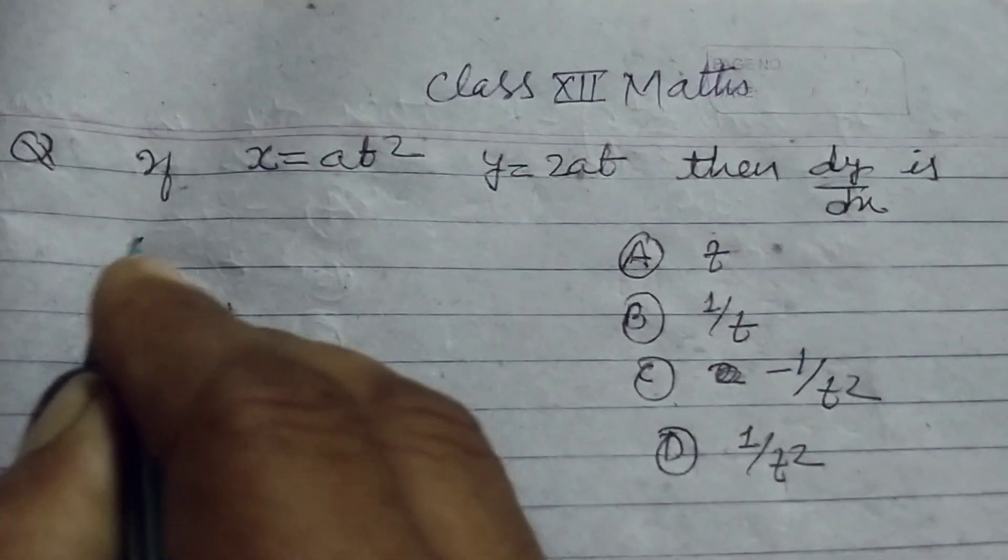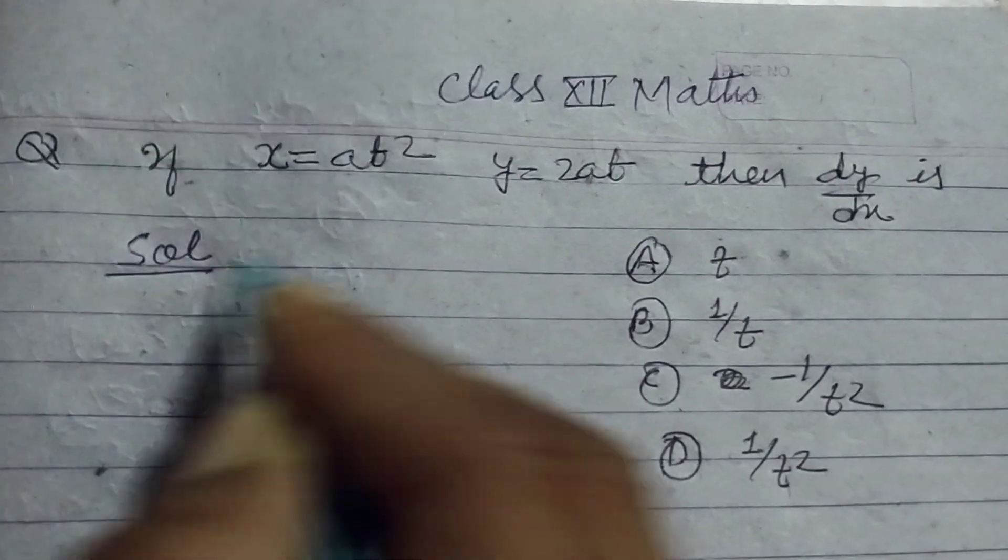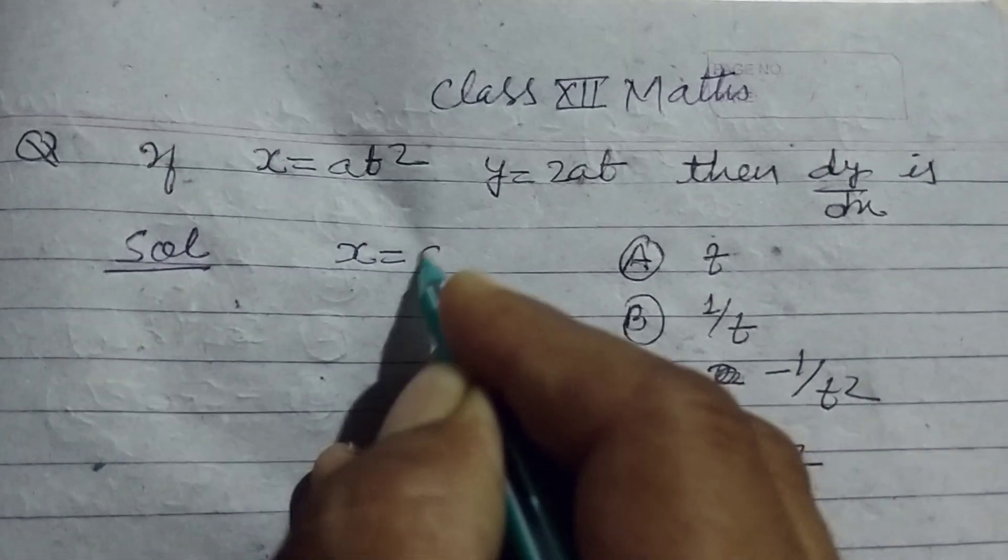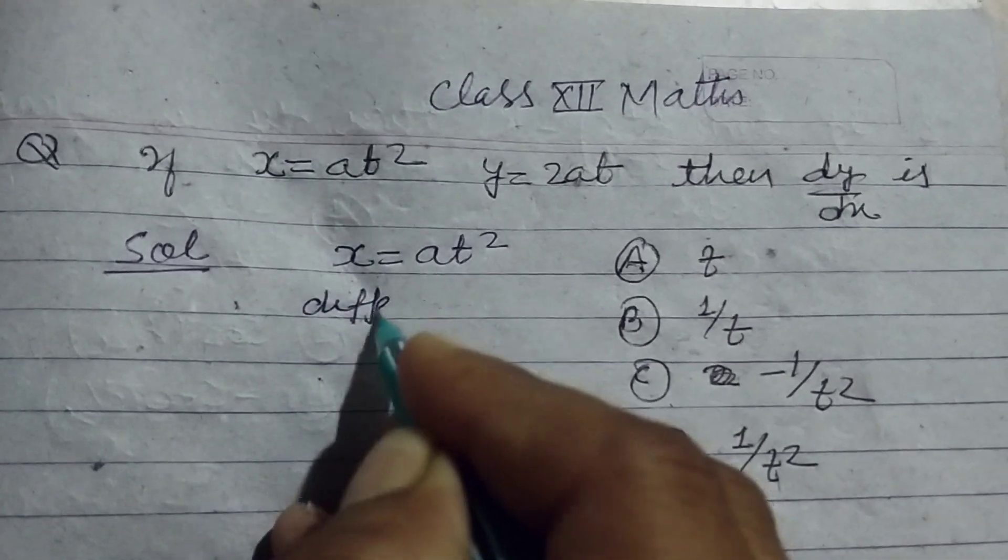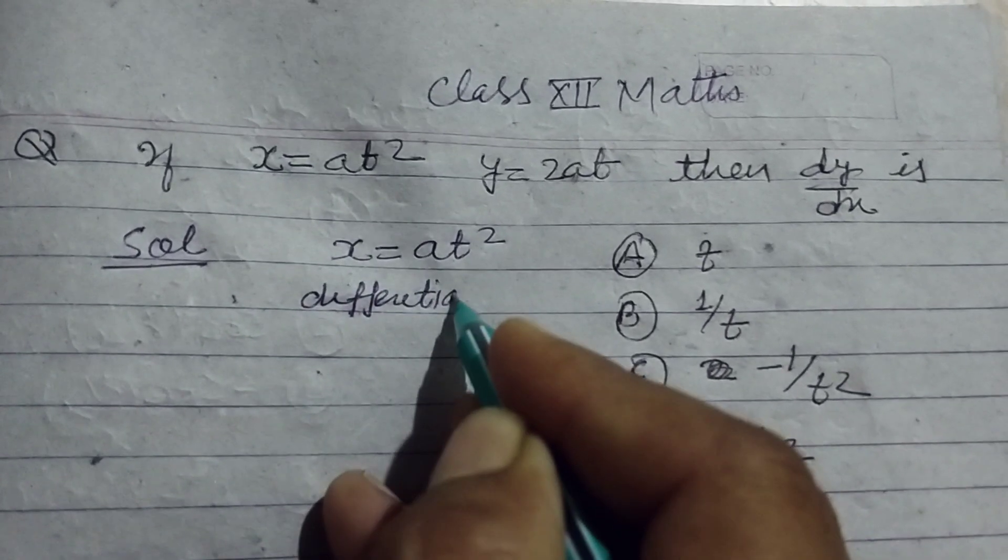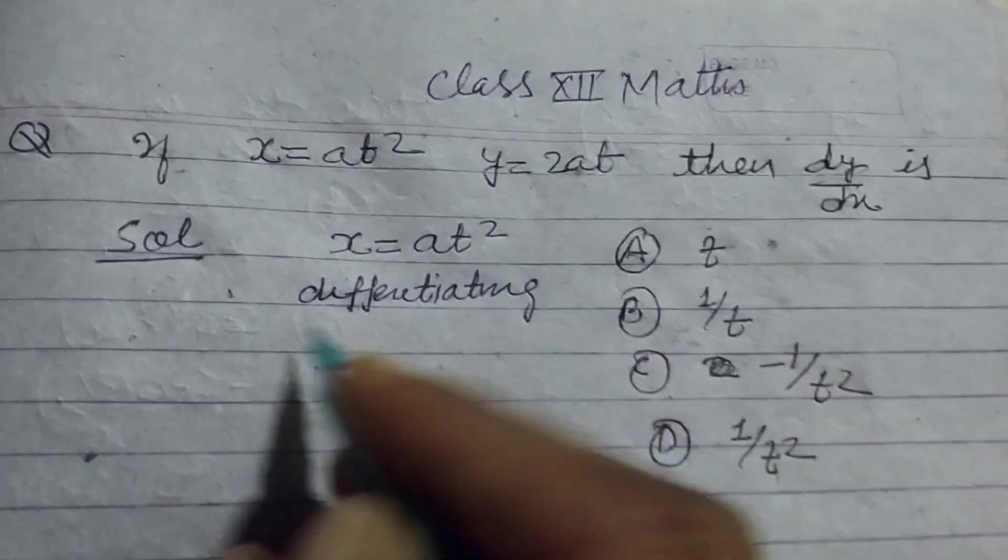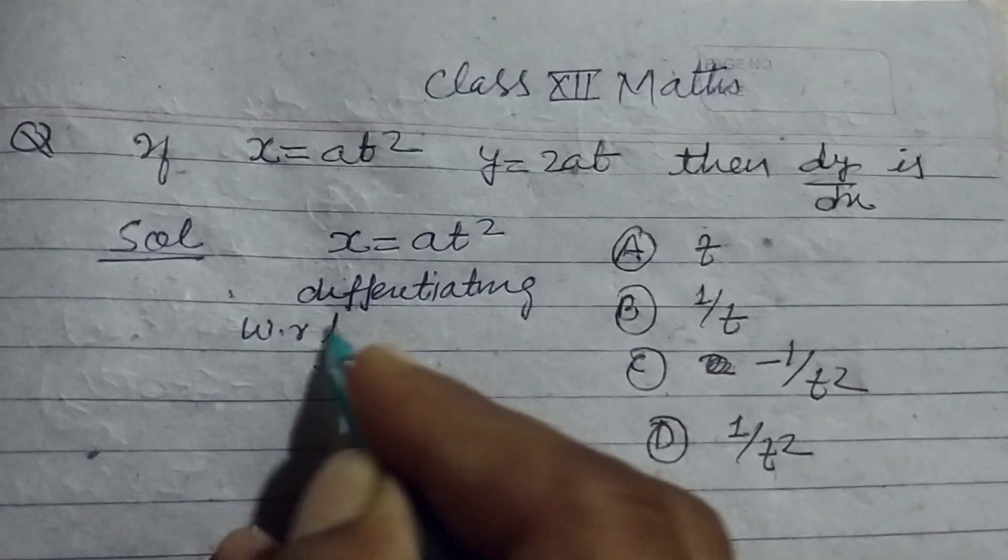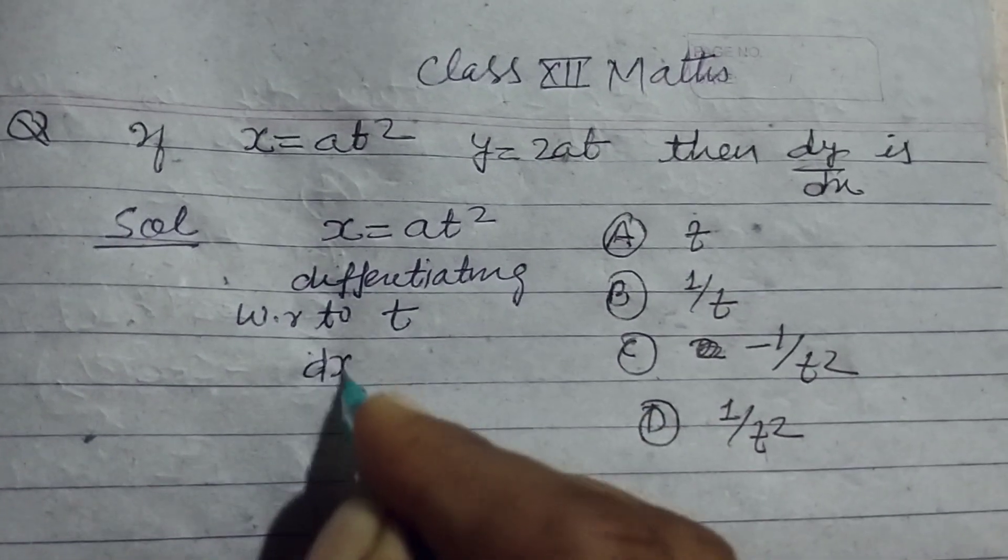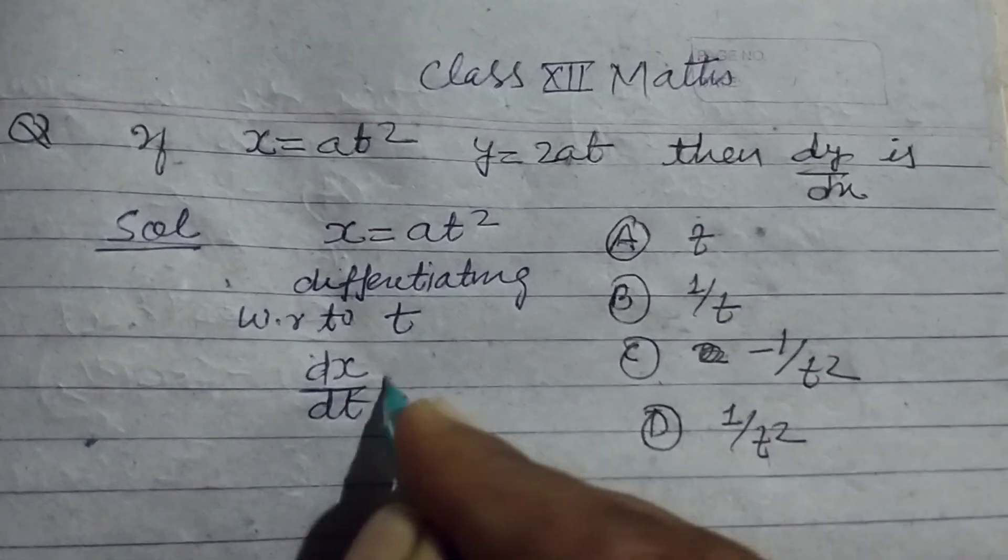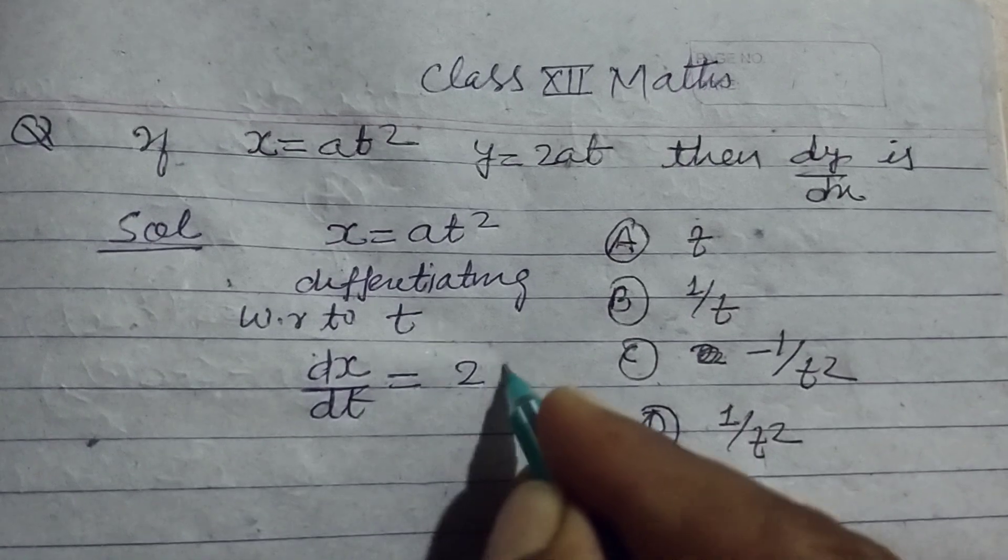So student, here we have x equals at². Differentiating with respect to t, we get dx/dt equals 2at.